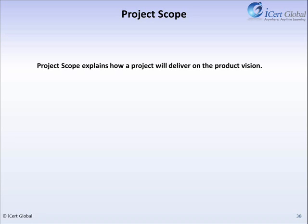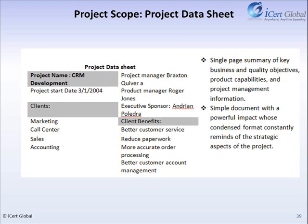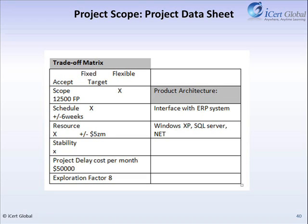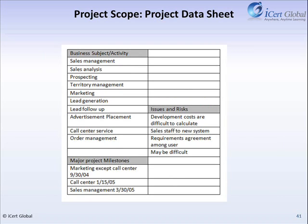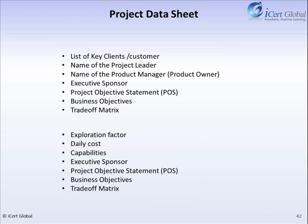Project Scope explains how a project will deliver on the product vision. The project datasheet conveys the essence in terms of scope, schedule, and resources of how a project will deliver on the project vision. It is a single summary of key business and quality objectives, product capabilities, and project management information.